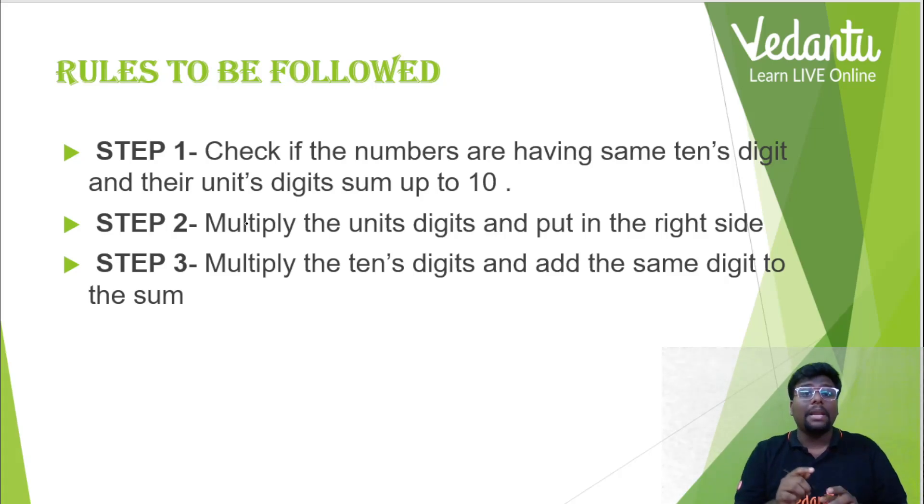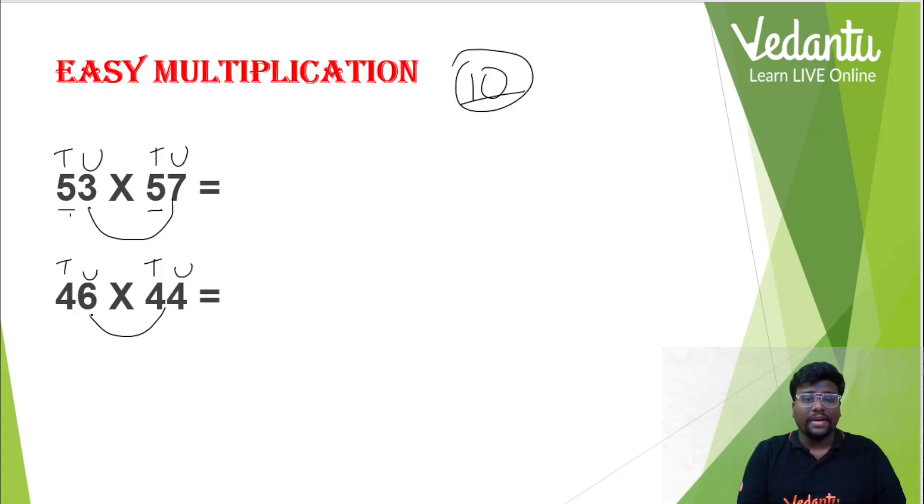Next, multiply the units digit and put it in the right side. Now, what are the units digit if I see 6 and 4 over here? 6 and 4. Now, 6 and 4, if multiplied, what do I get? I get 24. Let's put it on the right side as they said.